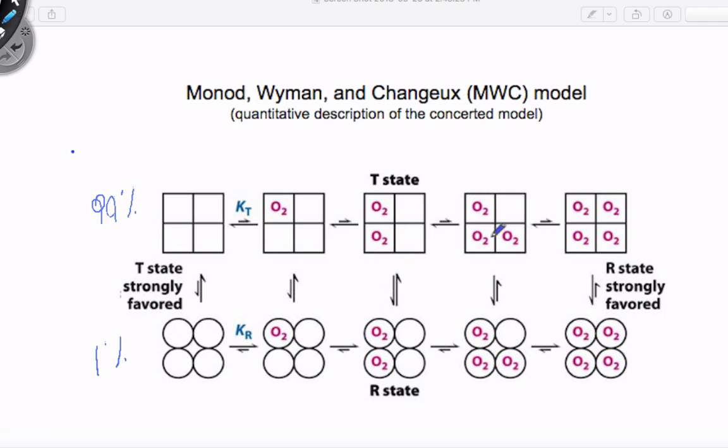And so by this point here, let's say we have three substrates bound, it's like 20% T and 80% R.